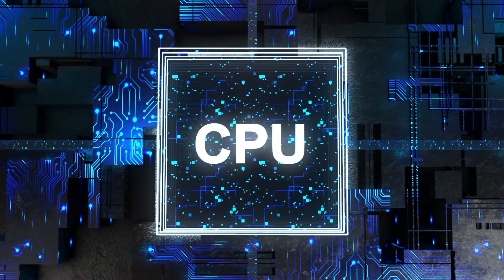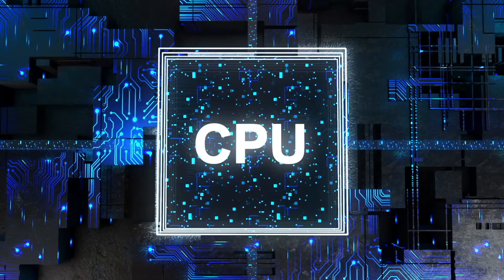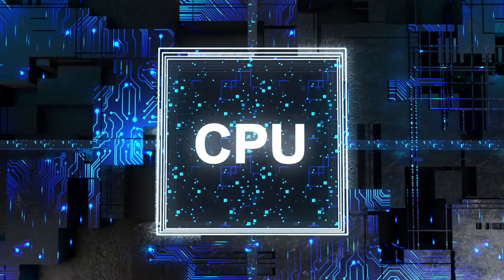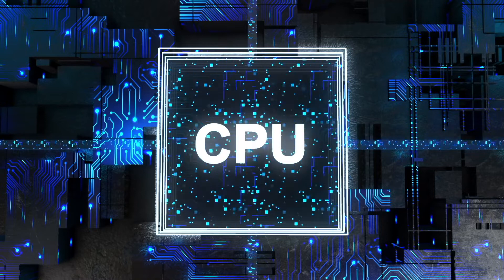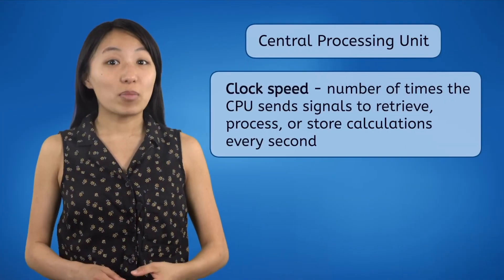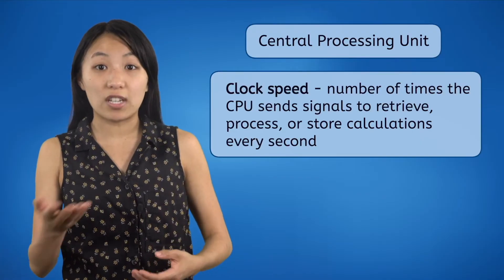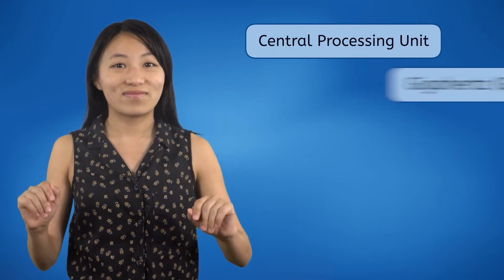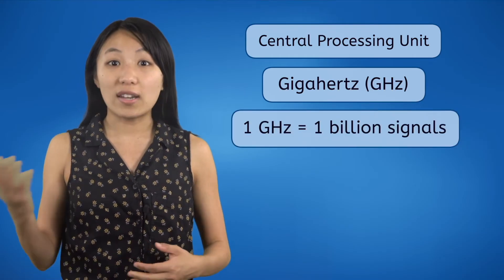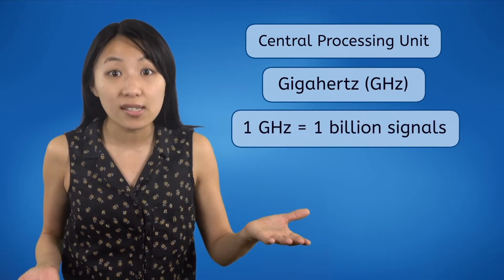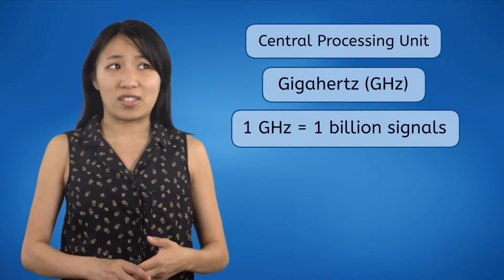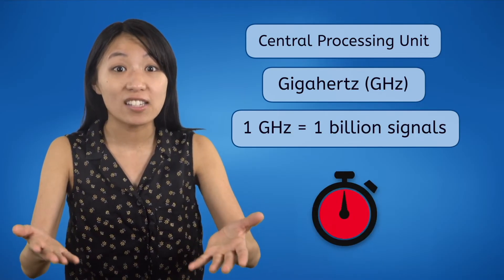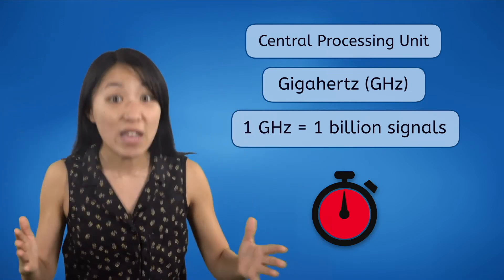The CPU sends signals and does calculations so fast, we don't even notice it. It's so fast there's no way we could visualize it, no matter how much we speed up this animation. The number of times the CPU can send signals to retrieve, process, or store calculations every second is known as its clock speed. Clock speed is measured in gigahertz, with one gigahertz being equal to one billion signals per second. The fastest CPUs, at least for now, have a clock speed of six gigahertz.